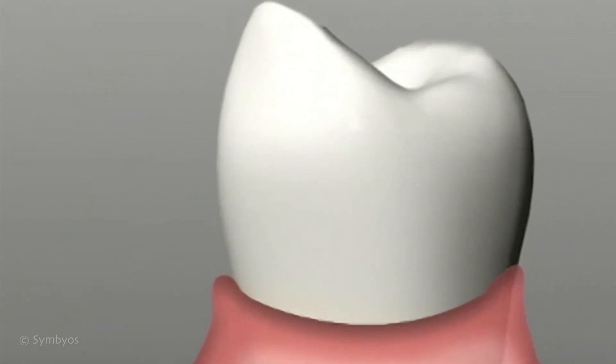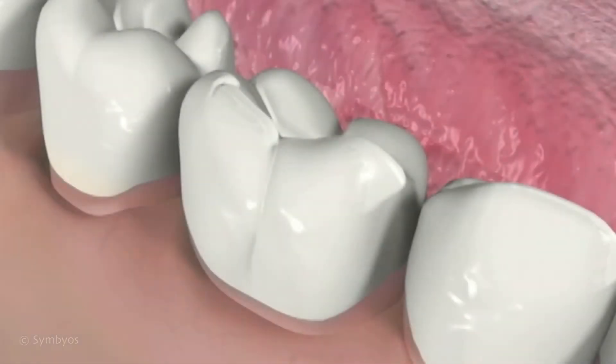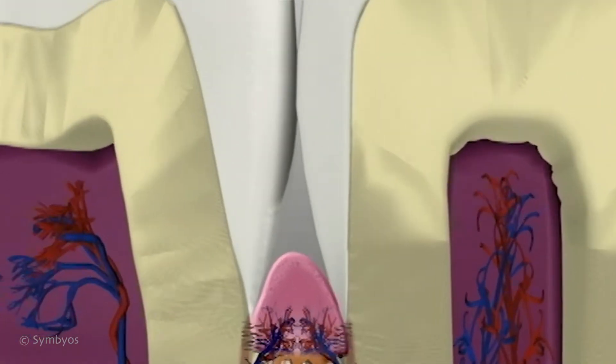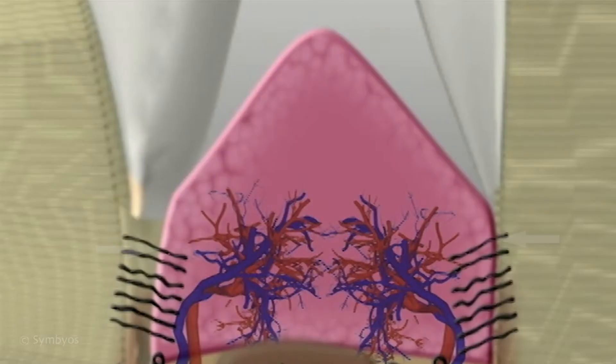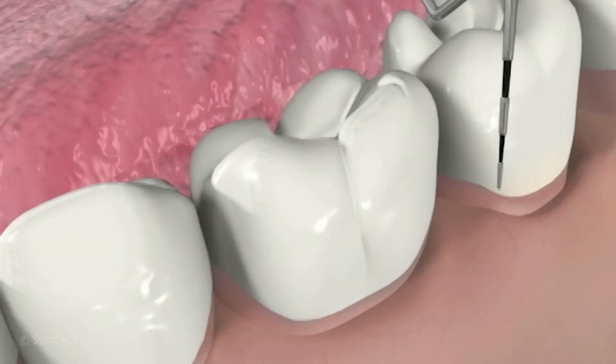Periodontal disease begins around the necks of the teeth, where they emerge through the gums. Healthy gums are pink in color. The gum pocket formed where the teeth emerge through the gums is 3 millimeters deep or less. The attachment fibers connecting the gums to the teeth and the teeth to the bone are intact. The gums are resilient and neither bleed nor hurt when being probed.